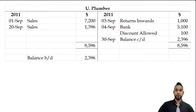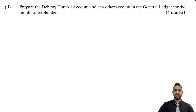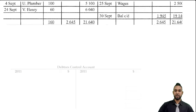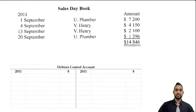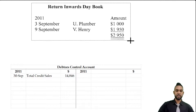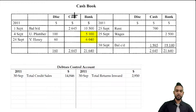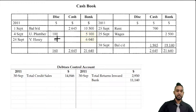Now let's prepare the debtors control account — also known as the sales ledger control account or debtors summary account. It's a single account that summarizes all transactions with debtors. It follows double entry rules for assets: debit to increase, credit to decrease. The total credit sales figure of $14,846 goes on the debit side. Total returns inwards of $2,950 goes on the credit side. From the debit side of the cash book, the total money received from debtors is $11,140, plus discount figures.